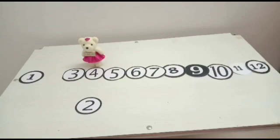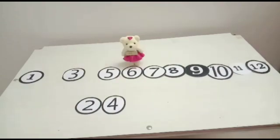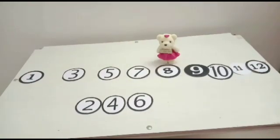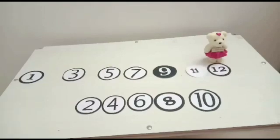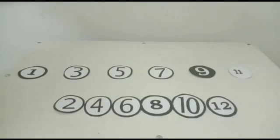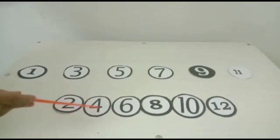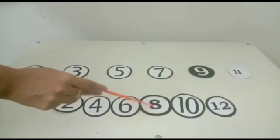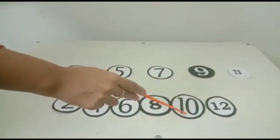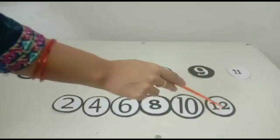So the first number on which she jumped was 2. Next it was 4. Next it was 6. Then she jumped on 8. Next number was 10. And last number was 12. So here students, 2 plus 2 is 4, 4 plus 2 is 6, 6 plus 2 is 8, 8 plus 2 is 10, 10 plus 2 is 12.